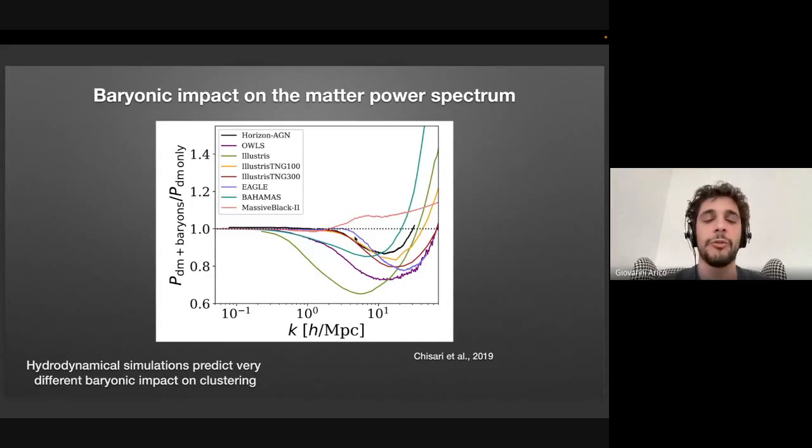So if we go to smaller scales, astrophysical effects, for instance, the cooling of the gas, the galaxy formation, AGM feedbacks are no longer negligible and we need to take into account them.